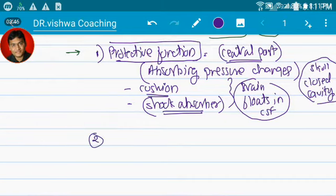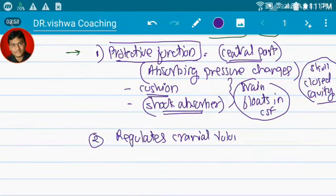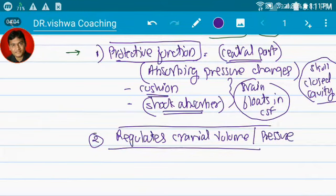Second important function that can be explained in the viva: it regulates the cranial volume as well as pressure, because the brain or the skull bone is a closed cavity.